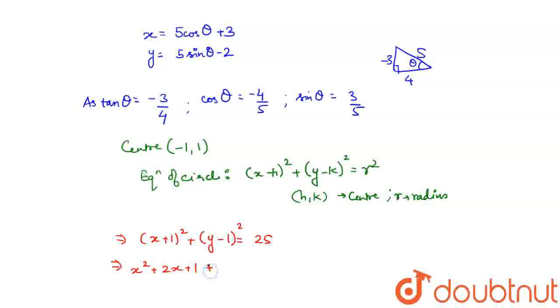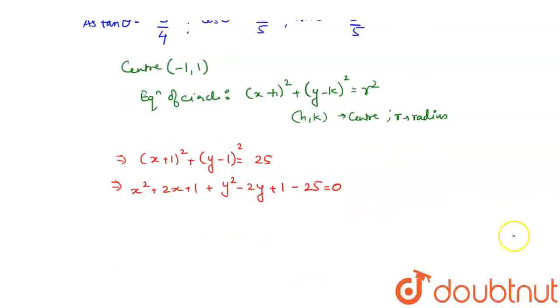So if I evaluate this, what do I get? I get x square plus 2x plus 1 plus y square minus 2y plus 1 minus 25 is equal to 0. So if I further solve it, what do I get? x square plus y square plus 2x minus 2y, 1 plus 1 is 2, 2 minus 25 minus 23 is equal to 0.